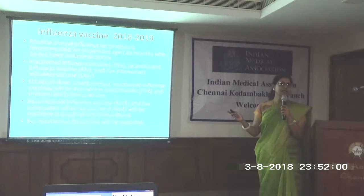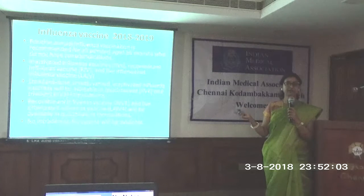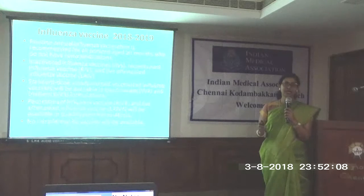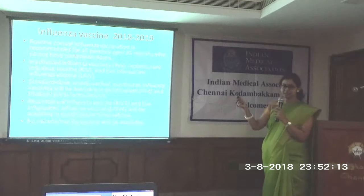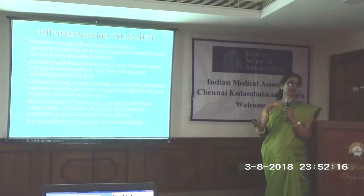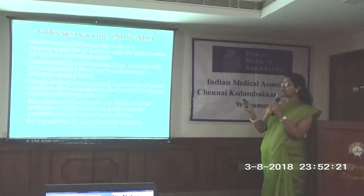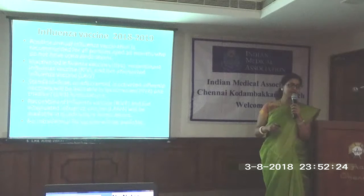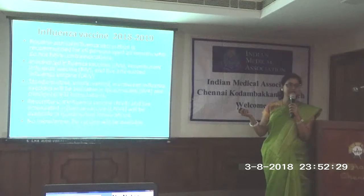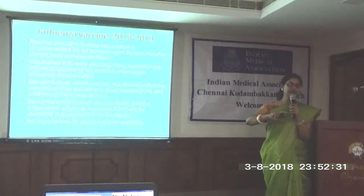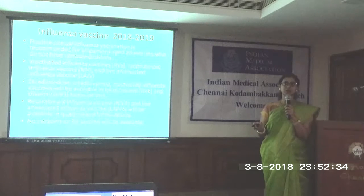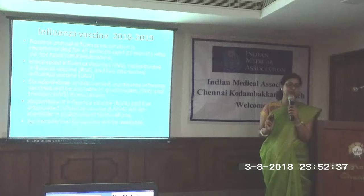This is the newly updated influenza vaccine for 2018-19. Influenza vaccine is suitable for all age groups above six months and basically has no contraindication for administration. This year they have also included live attenuated vaccine alongside the usual inactivated influenza vaccine and recombinant influenza vaccine. Among the inactivated vaccines, there is a trivalent and a quadrivalent vaccine — both are good and updated, and you can prescribe either for patients.